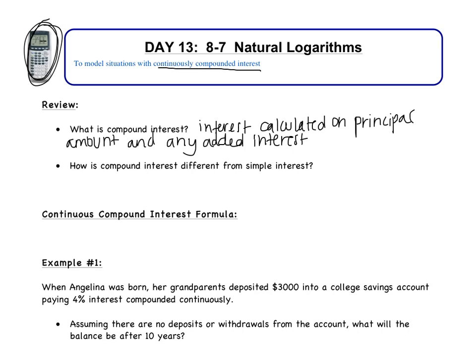This is different from simple interest, which is interest based only on the starting amount. So if I put $100 in the bank, 20 years from now with simple interest I'm only getting interest on that $100. Whereas compound interest gives me interest based on the $100 I put in and any interest obtained after that. Compound interest is always better for you than simple interest.